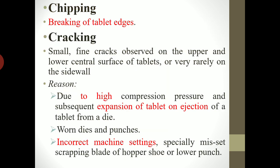Next is chipping. The simple definition is that it is the breaking of tablet edges — the edges of the tablet will get broken, and that defect is called chipping. Next is cracking. As the name suggests, cracks will occur either on the upper or lower central portion of the tablet, or sometimes on the side wall.